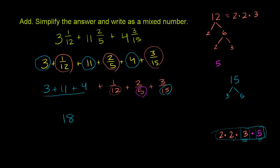2 times 2 is 4. 4 times 3 is 12. 12 times 5 is 60. So the least common multiple of 12, 5, and 15 is 60.